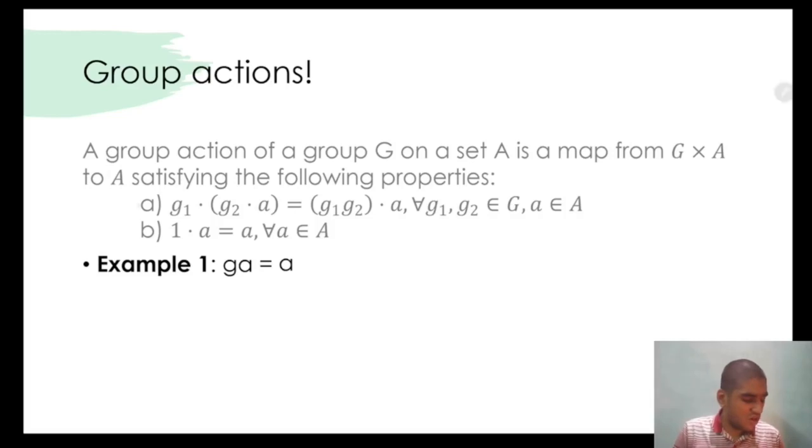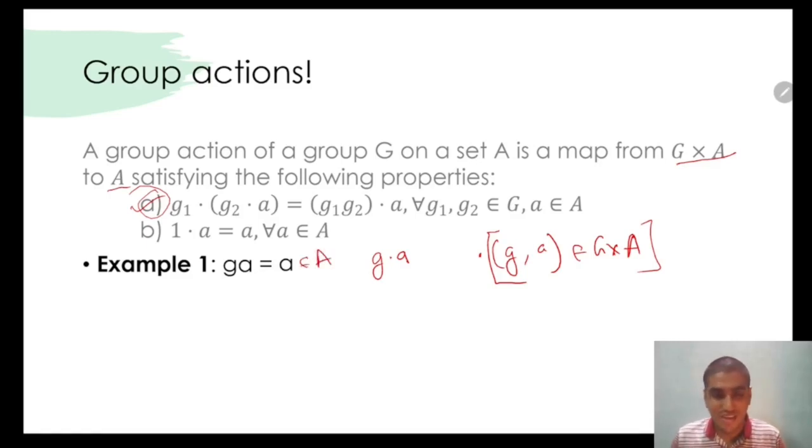To begin with, let's check the first condition: G1 dot G2 dot A. Oh wait, the real first condition to check is if the map is from G cross A to A. Turns out it is. GA is nothing but G dot A, or in other words, G dot of G comma A. Now this tuple G comma A belongs to G cross A, therefore the domain is correct, and A belongs to A, therefore the codomain is also correct.